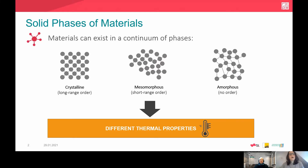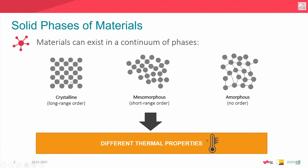Materials can exist in a continuum of phases — from crystalline, where we have long-range order of our atoms, to mesomorphous state, where we have short-range order, meaning that in the global aspect of the compound we don't have long-range order but we have order at the short-range scale. And then we have amorphous materials where we have no order. These materials all have different thermal properties.